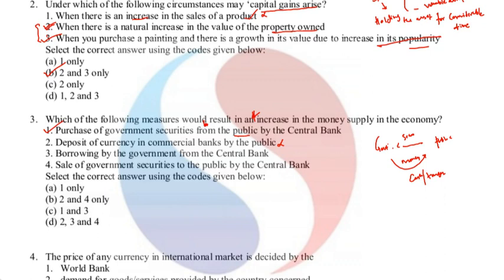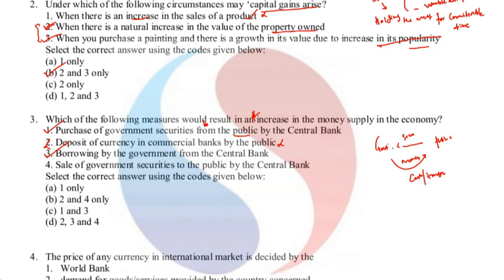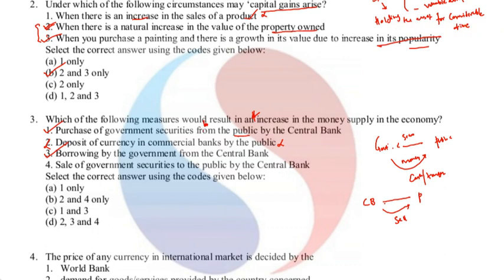Third option: borrowing by the government from the central bank — the moment government borrows from the central bank it will spend that money, and in one manner or other it automatically leads to enhanced money supply. Third option is correct. Fourth option: sale of government securities to the public by the central bank — the central bank is selling securities and absorbing money, so it squeezes money supply. The answer is only one and three, option C.